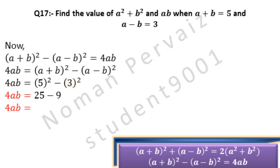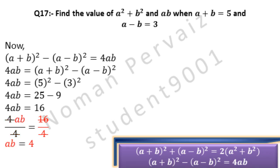So 4ab = 25 − 9, and 16 is obtained by subtracting 9 from 25. Next we divide both sides by 4 to find ab. 4 and 4 cancel, and 16 divided by 4 gives us 4. So ab = 4.